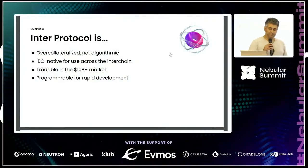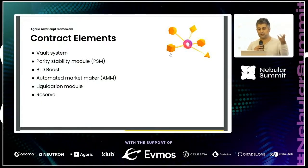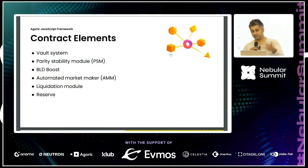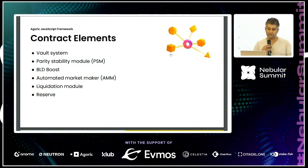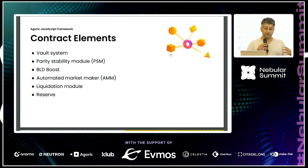We want IST to be what Maker is to Ethereum — the sort of route leverage debt-backed decentralized stable asset across the entire IBC ecosystem. This talk is going to focus on the bits and pieces that make IST work.